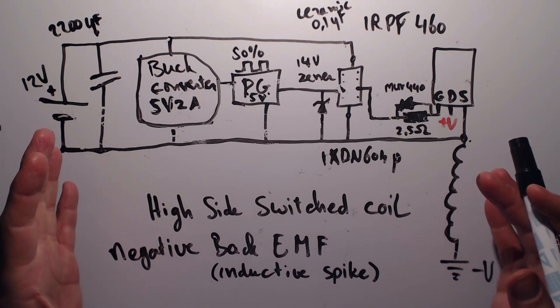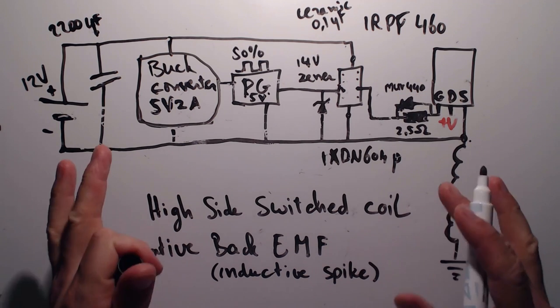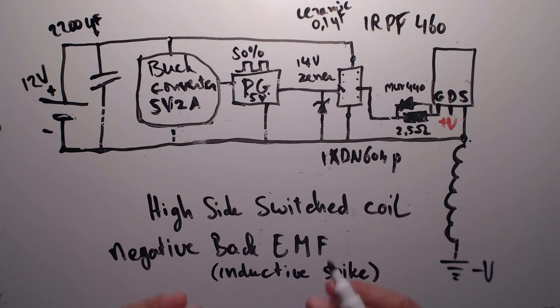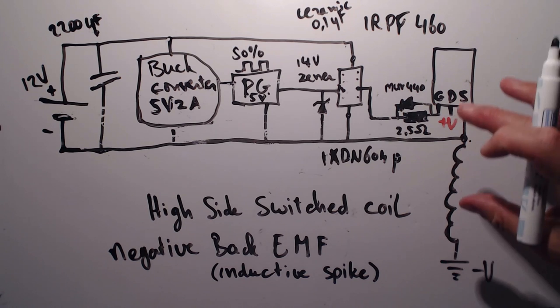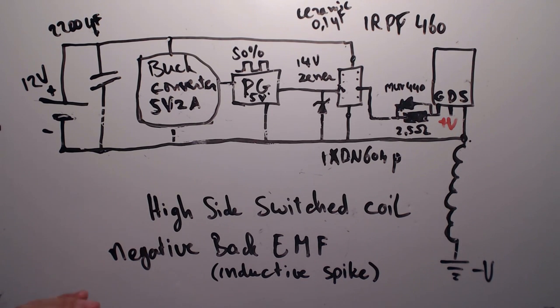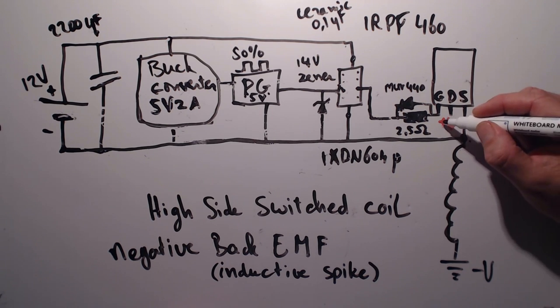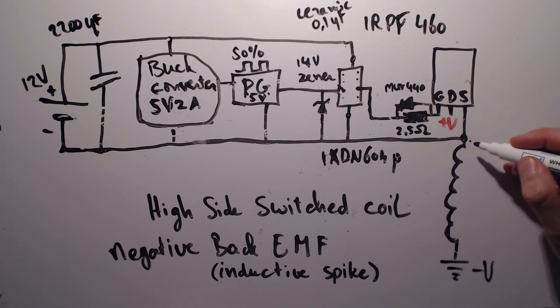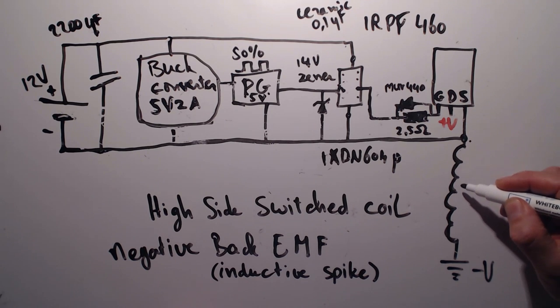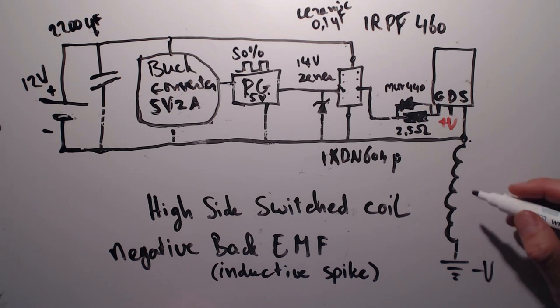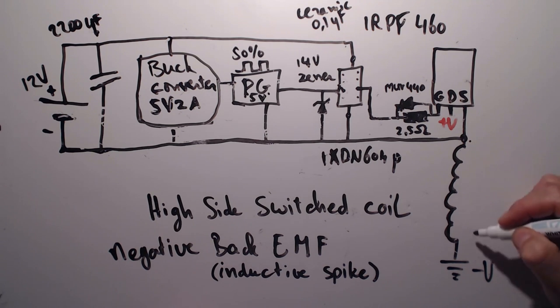Why do we do this? This is one of the easiest ways to switch a coil on the high side. And this produces a negative back EMF. That is also known as an inductive spike. If the gate is high, the switch is close to the positive power supply. And there is a current flowing through the coil. This produces a magnetic field inside of the coil.